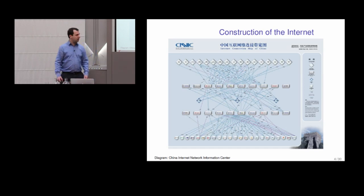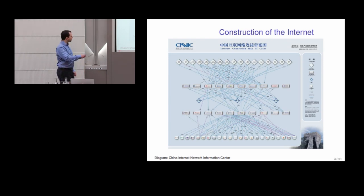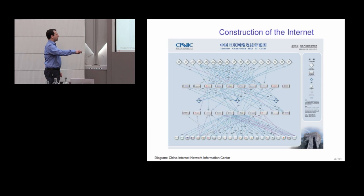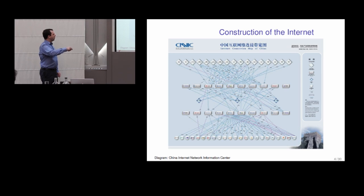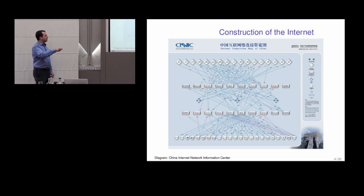Taking a concrete example — this is China, the map of the Chinese internet. At the bottom you have the major ISPs who provide internet to customers. There's a much smaller number of core ISPs — this is actually all of them. These core ISPs can connect to any other ISPs in China, whereas the smaller ones can only connect to maybe one or two they have special deals with. This shows the connectivity between each of these internet service providers, and these three things are internet exchanges.